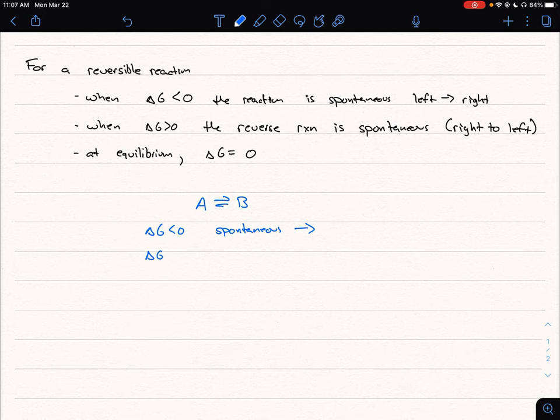If delta G is greater than zero, then we're spontaneous in the reverse direction.